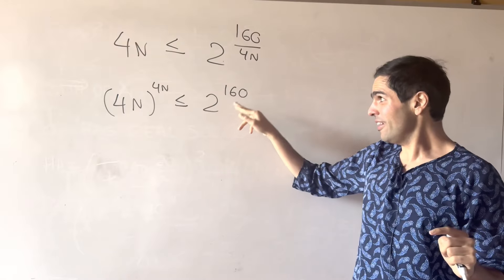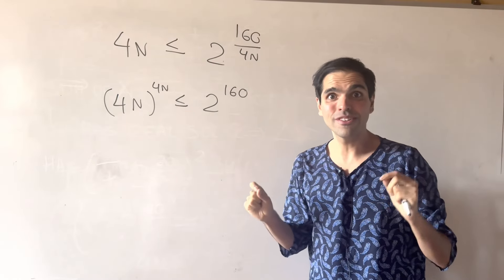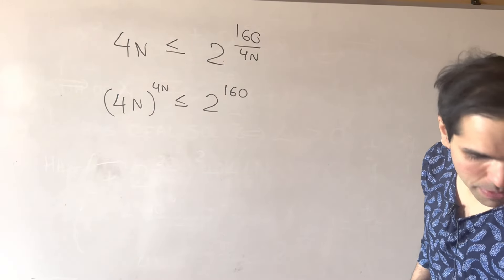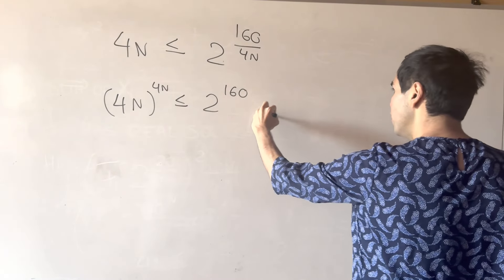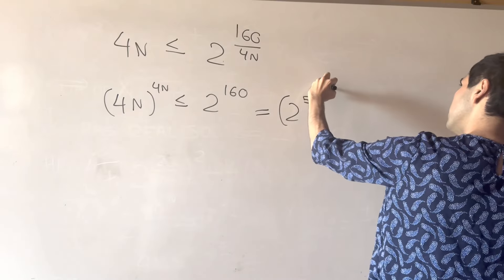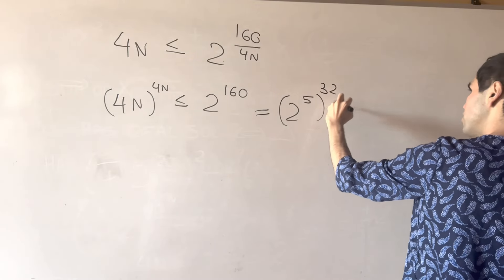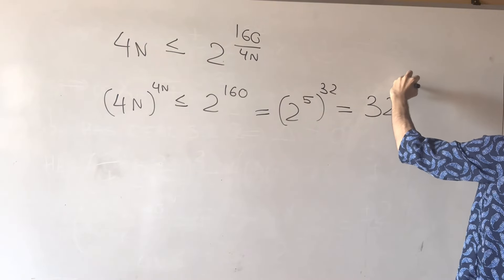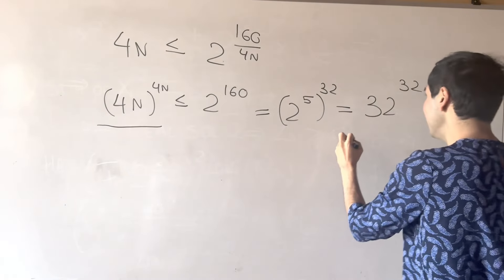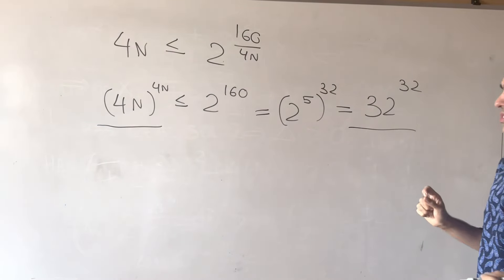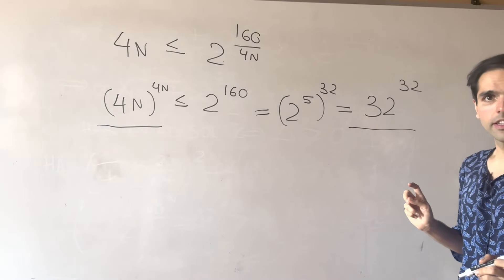And, again, so far, it looks like an equation that's impossible to solve. But, really, the structure of those numbers is very important here because 2^160 becomes (2^5)^32. And that's just 32^32.